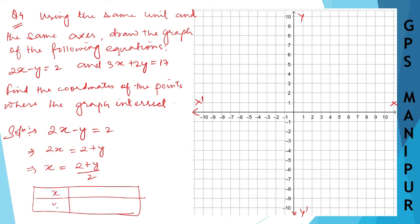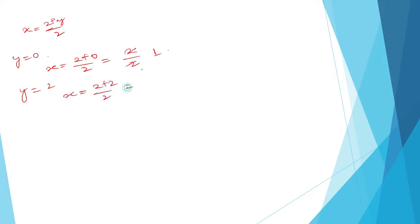Let me make a table for equation number 1. x equals (2 + y) / 2. When y is equal to 0, x will be equal to (2 + 0) / 2, which is 2/2, so x equals 1. When y is equal to 2, x will be equal to (2 + 2) / 2, which is 4/2, so x equals 2.